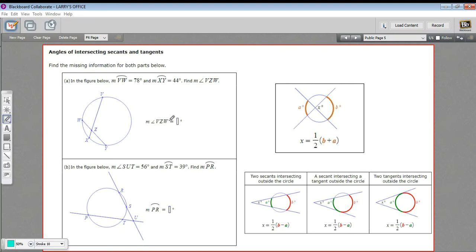Here we have a couple of problems that have to do with secants or tangents that intersect in and around circles. In this first one here, we have these two secant lines that intersect inside a circle.